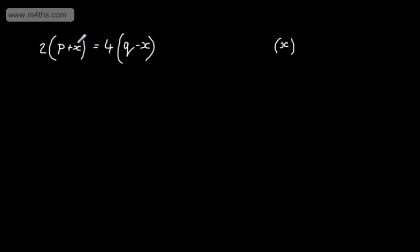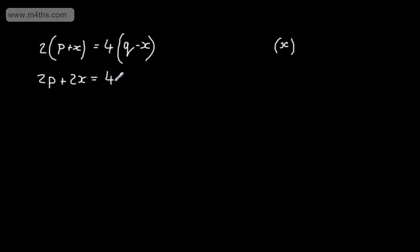I can see there's an x on the left-hand side and an x on the right-hand side, and in both cases they're in brackets. So what we need to do is expand the brackets on both sides and collect the terms in x. On the left-hand side I'm going to have 2p + 2x, and on the right I'm going to have 4q minus 4x.